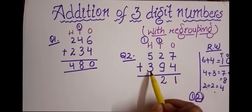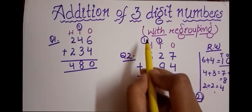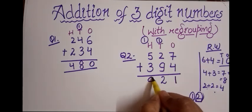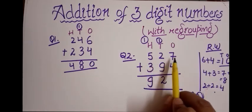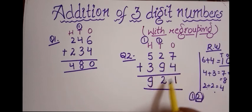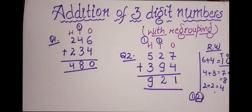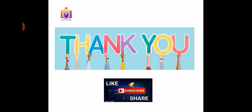Now for the hundreds column: five plus three equals eight, plus the carry of one makes nine. So I write nine here. The answer is 527 plus 394 equals 921. Today we've done two questions and I hope the concept of addition with regrouping is clear. We've now completed the addition series covering one-digit, two-digit, and three-digit numbers with and without regrouping. Check the previous videos if you have any doubts. Thanks for watching — please like, share, and subscribe for more such videos!